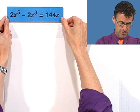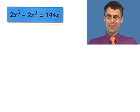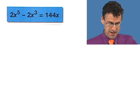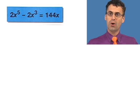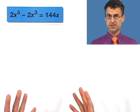Check out this awesome polynomial equation: 2x to the fifth, wow, now we're talking, minus 2x cubed equals 144x. We want to now solve this for x and find the solutions.